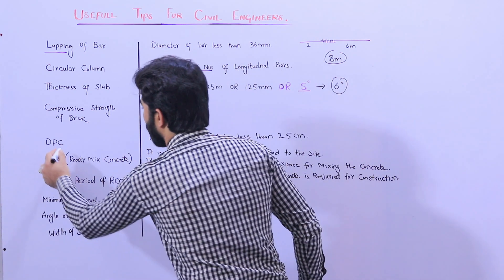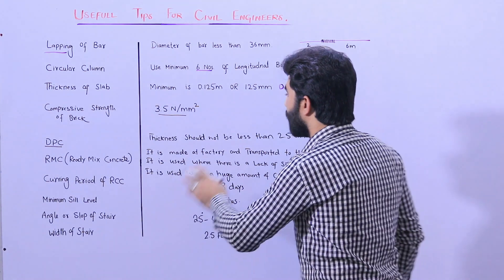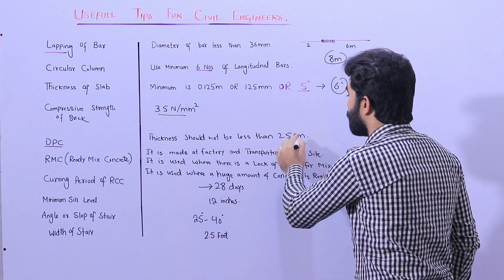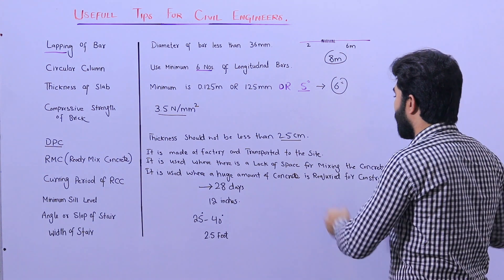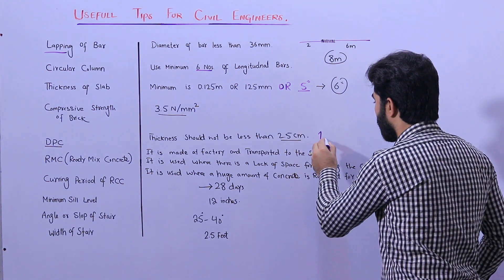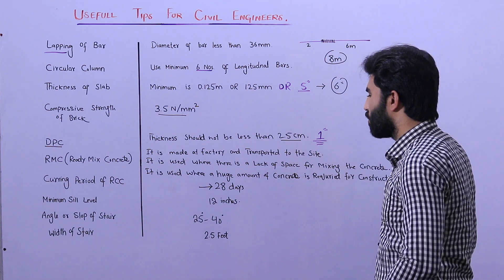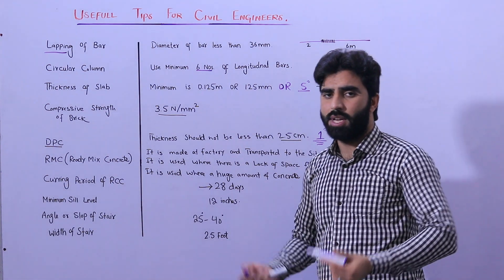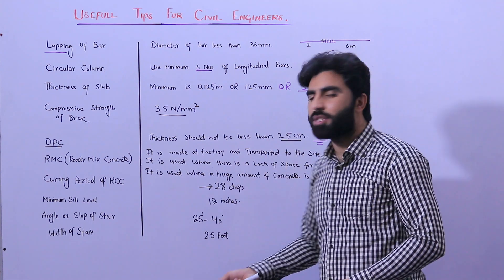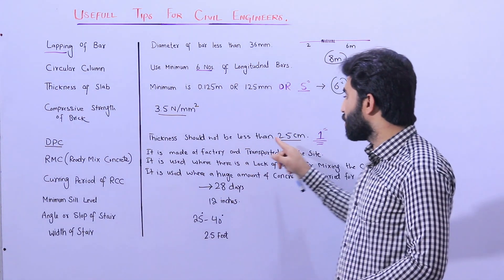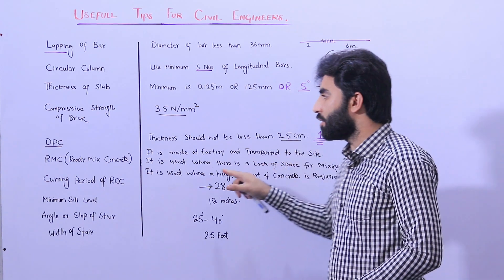The next tip is DPC — Damp Proof Course. The thickness should not be less than 2.5 centimeters, or one inch. Normally you can use from 1.5 to 2 inches depending on the situation on the construction site, but the minimum is 2.5 centimeters.